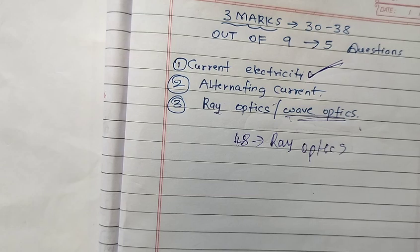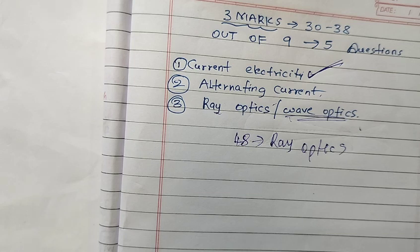A glass sphere of radius 0.15 cm contains a small air bubble at a distance of 0.06 m from its center. When viewed along its diameter from its nearest side, the bubble appears to be at 0.075 m. Calculate the refractive index of the glass and the apparent distance of the bubble from the farthest side.